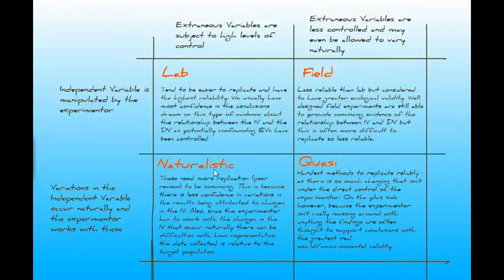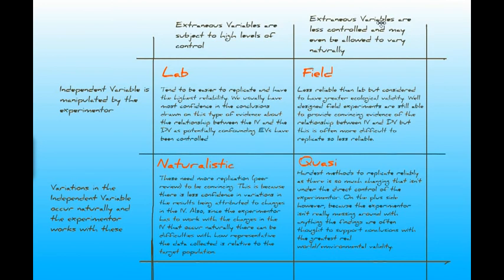Here are the four experiment types set out according to the two questions. One axis asks: are we manipulating the IV or allowing it to vary naturally? The other axis asks how much control we exercise over extraneous variables. In a lab experiment, we manipulate the IV and control all extraneous variables. This is easy to replicate, gives high reliability, and provides the most confidence that the IV and DV are genuinely related.